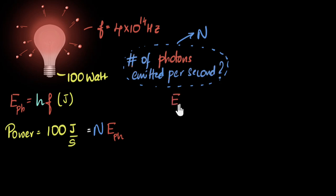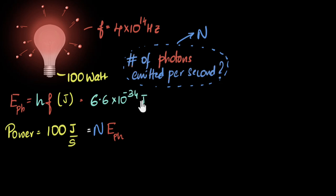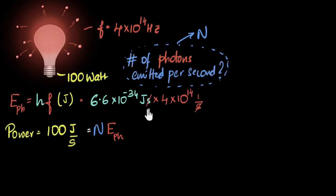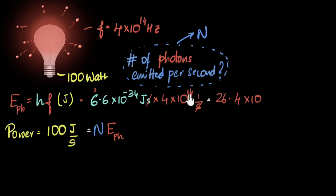Let me separately first calculate what the energy of the photon is going to be. This is going to be Planck's constant — 6.6 times 10 to the power minus 34 joule-seconds — multiplied by the frequency, four times 10 to the power 14 hertz. Hertz is one over second, so seconds cancel and we get joules. Six fours are 24, carry the two, six fours again are 24, giving 26.4 times 10 to the power minus 20 joules.